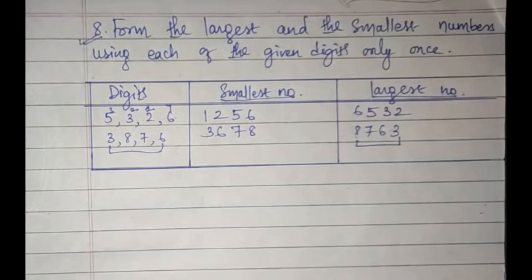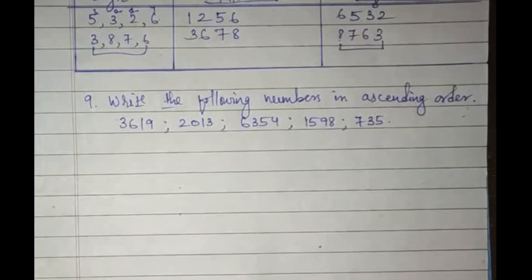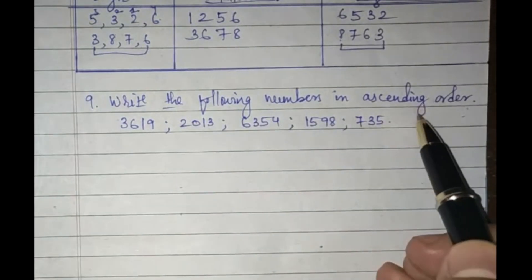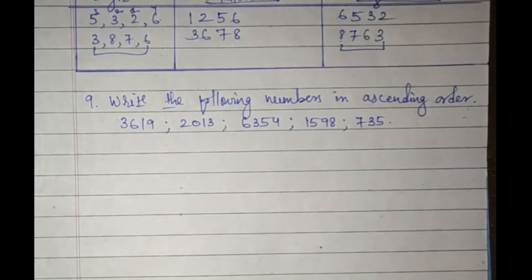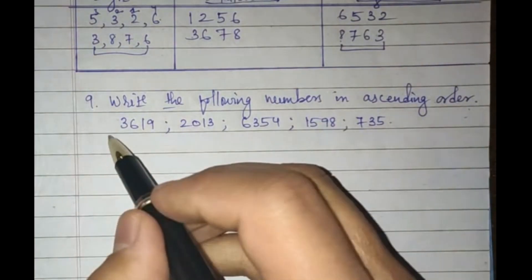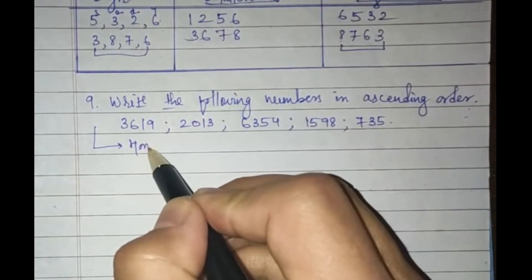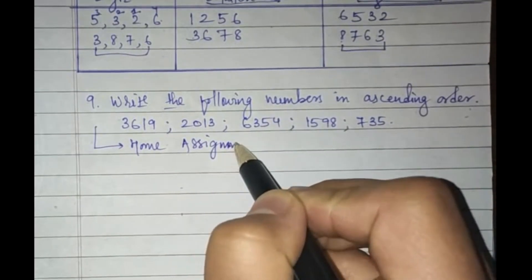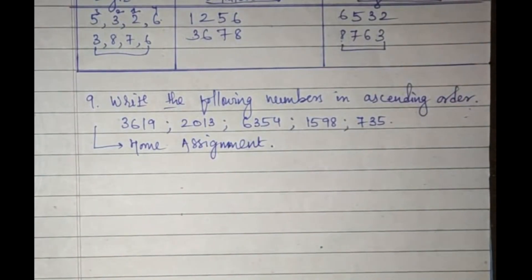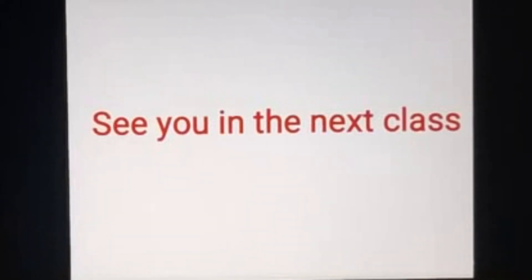The next question, number nine, asks you to write numbers in ascending order — I hope you can do it yourself, so that will be your home assignment. Try to do it yourself. This will be home assignment. Until the next class, stay safe and healthy and do your home assignment. Thank you, everyone!